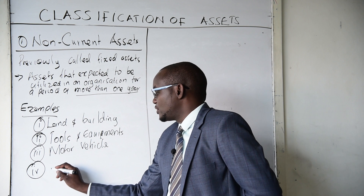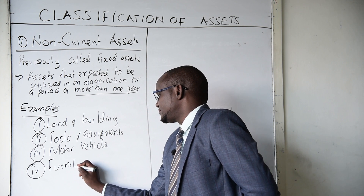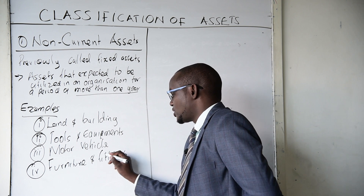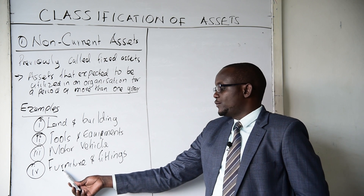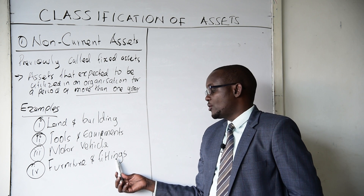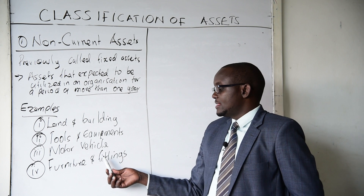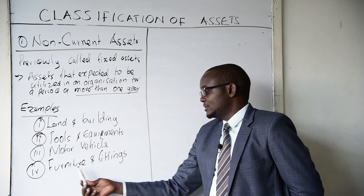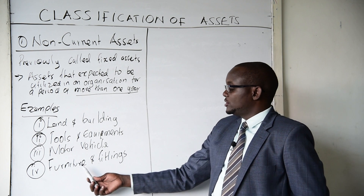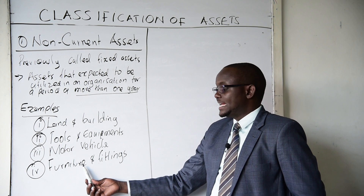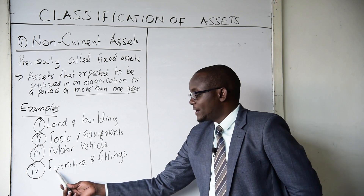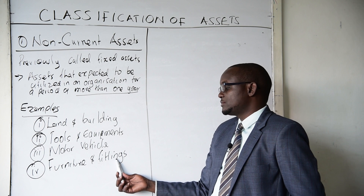Four, we have what we call furniture and fittings. We use the name furniture and fittings because some items like a door cannot exist without metallic components such as a lock, which is a fitting, or nails, which are also fittings. So we have the furniture — the timber part — and the fittings, which are the metallic elements.